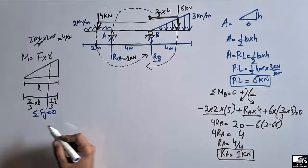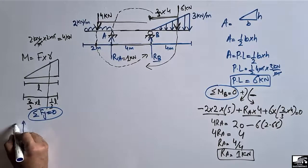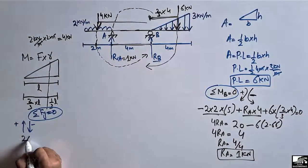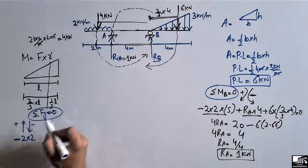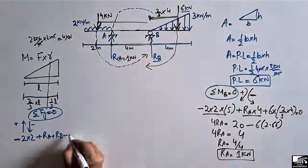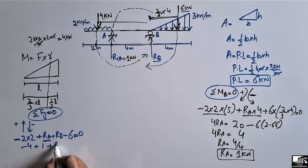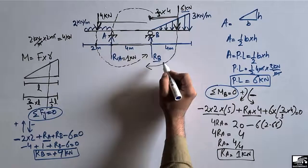To find RB, we use the vertical equilibrium equation: summation of all vertical forces equals zero. Upward forces are positive and downward forces are negative. So: minus 4 (UDL) plus RA (1) plus RB minus 6 (triangular load) equals zero. Simplifying: RB equals 9 kilonewtons.